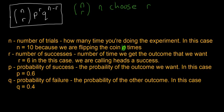q then is the probability of failure or the probability of whatever the other outcome is. In this case, it's the probability of a tails, so it's equal to 0.4 because 0.4 is the probability of a tails. So that's what each of the different numbers or letters stand for in the formula.